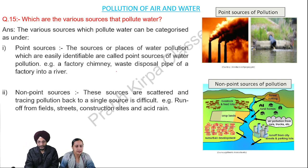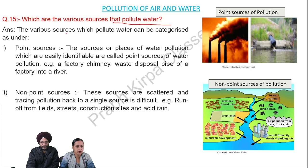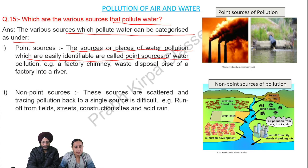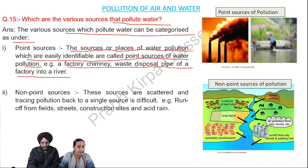Which are the various sources that pollute water? The various sources of water pollution can be categorized as follows. Number 1: point sources — sources or places of water pollution which are easily identifiable are called point sources. For example, a factory chimney or a disposal pipe of a factory discharging into a river.